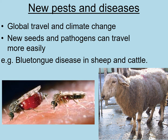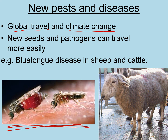Another factor affecting food security is new pests and diseases. Because of the increase in global travel, different pests and organisms can travel to different countries quite easily, and climate change is also a factor. The example here is blue tongue disease in sheep and cattle. A type of midge normally only survives in hot climates like areas of Africa and North Africa, but as climate change increases temperatures globally, these midges are now able to travel to the UK and affect our livestock.